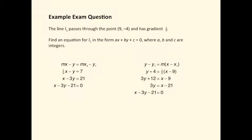Going back to the mx minus y equals mx1 minus y1 formula. Here's an exam question: the line L1 passes through the point (9, -4) and has gradient 1/3. Find its equation in the form ax plus by plus c equals 0, where a, b, and c are integers.